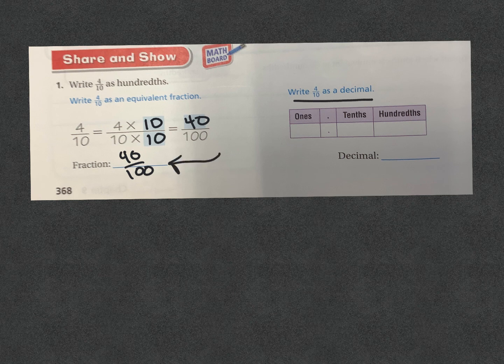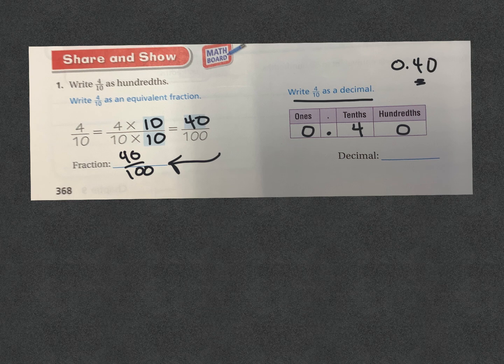Now we're writing 4 tenths as a decimal. That was 40 hundredths — we have 0 and 40 hundredths. If we just had 0.4 and we wanted the hundredths place, I'm sitting here with this number ending in the tenths place and I really want it to end in the hundredths place. Now it ends in the hundredths place. 4 dimes, remember, is 40 cents. So my decimal, if I want it to end in the hundredths place, is 0 and 40 hundredths.